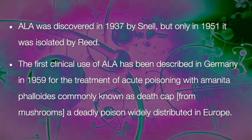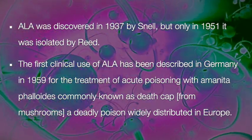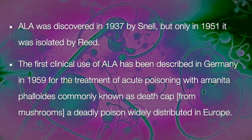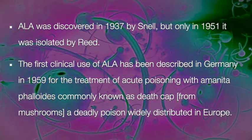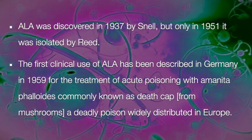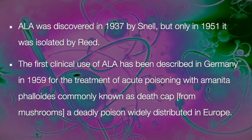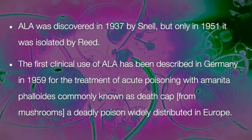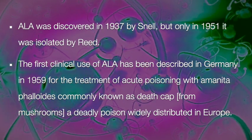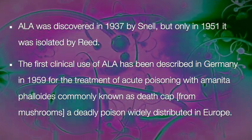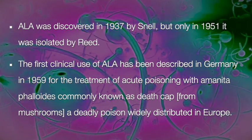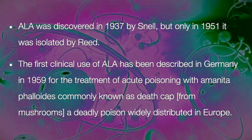ALA was discovered in 1937 by Snell, but only in 1951 was it isolated by Reed. The first clinical use of ALA has been described in Germany in 1959 for the treatment of acute poisoning with Amanita phalloides, commonly known as death cap mushrooms, a deadly poison widely distributed in Europe.